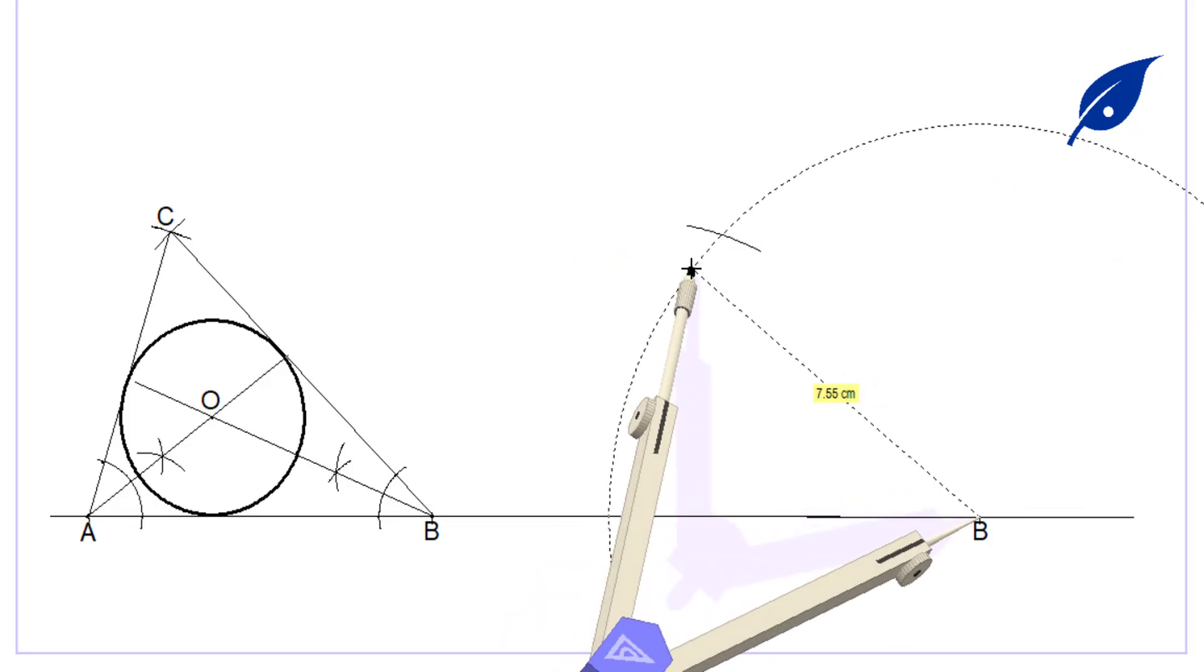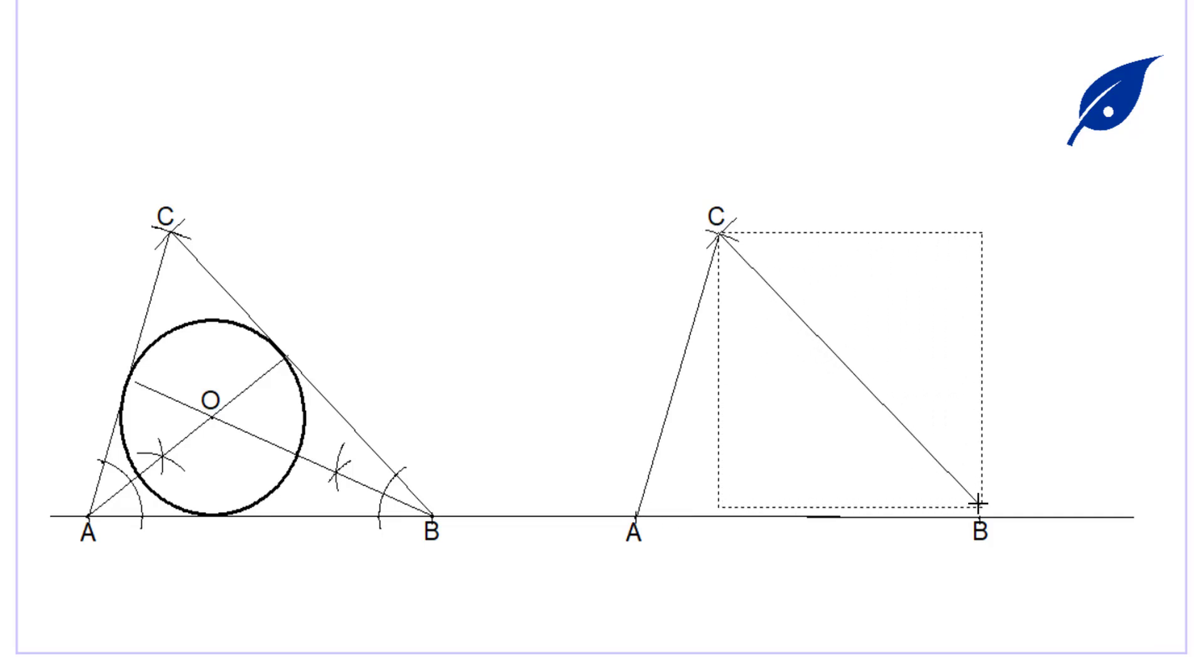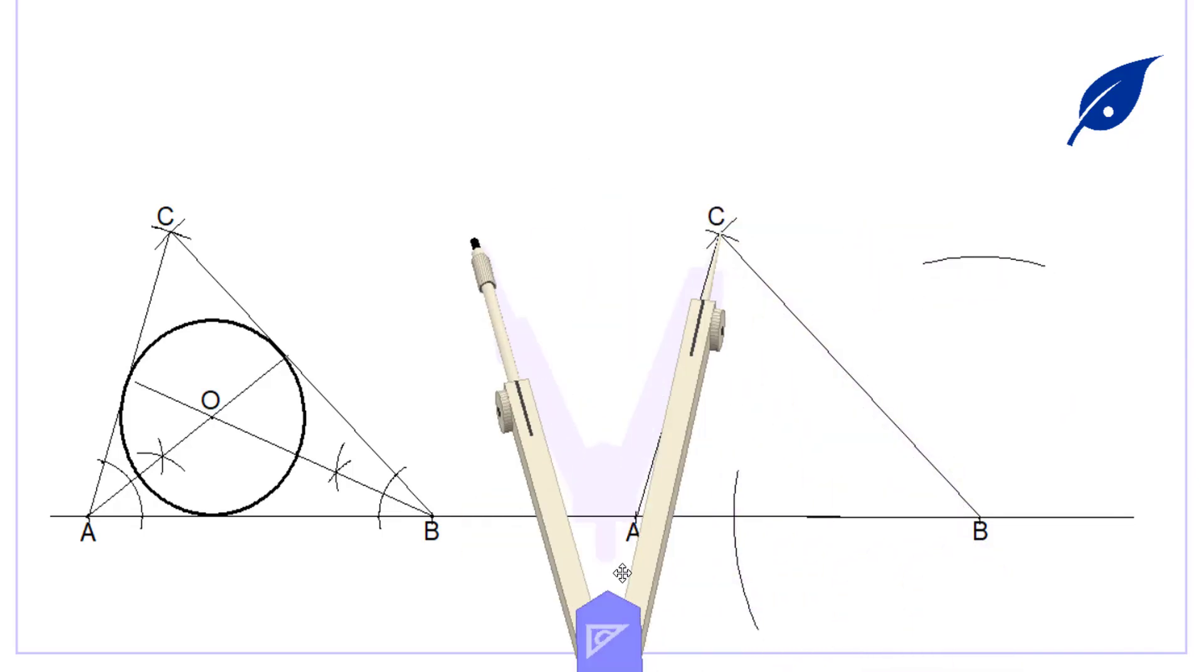Given triangle ABC, but this time around we're going to circumscribe. In circumscribing a circle, it means you're bisecting the sides of the triangle. The first side you're going to bisect is side CB.